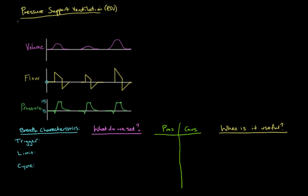As I've said in many other videos on mechanical ventilation, one of the biggest problems with understanding ventilation is terminology. Pressure support ventilation on different ventilators is called different things. It can be called CPAP and pressure support. It can be called simply spontaneous ventilation. There are lots of different terms for this mode of ventilation, but the theory behind it all is the same.